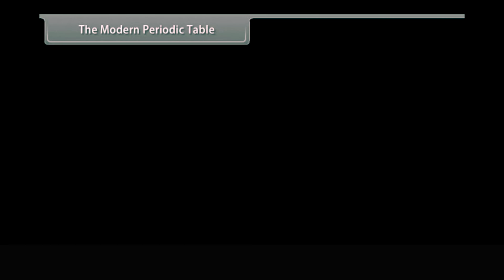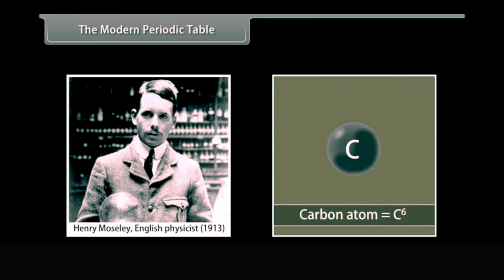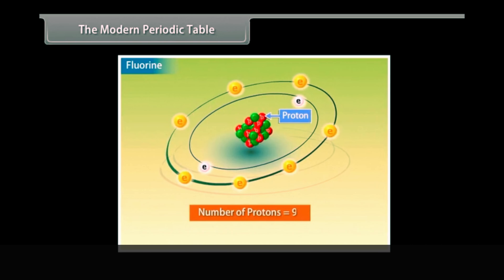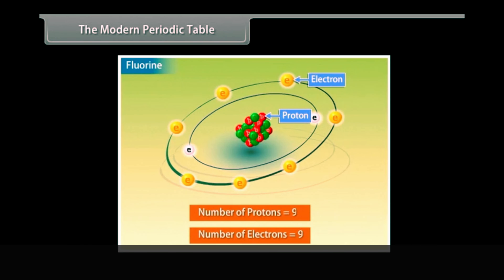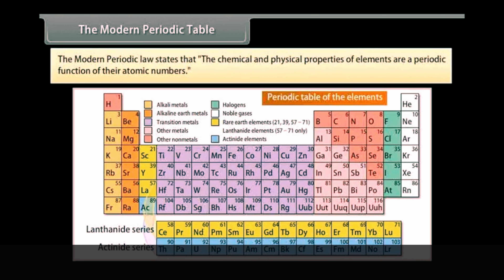Henry Moseley, an English physicist, in 1913 discovered that the atomic number is the most fundamental property of an element. The atomic number refers to the number of protons in the nucleus of its atom, and the number of electrons in a neutral atom is also equal to its atomic number. This led to a change in the periodic law. The modern periodic law states that the chemical and physical properties of elements are a periodic function of their atomic numbers.